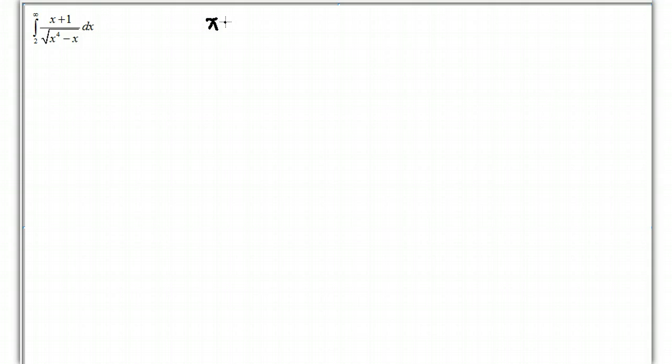So, the plus 1 in the numerator together with the minus x in the denominator will give you something that is bigger than if they weren't there.